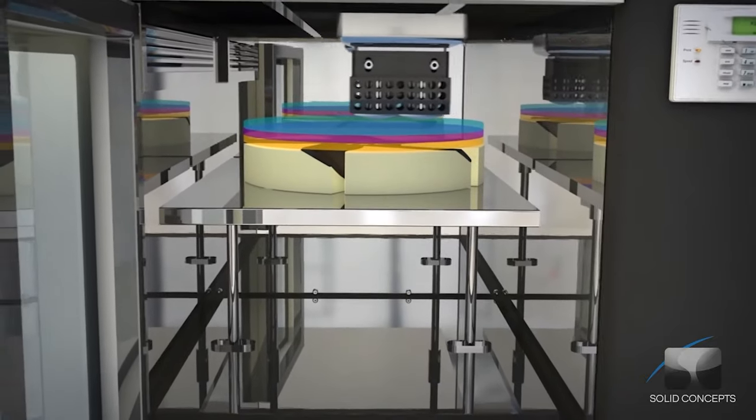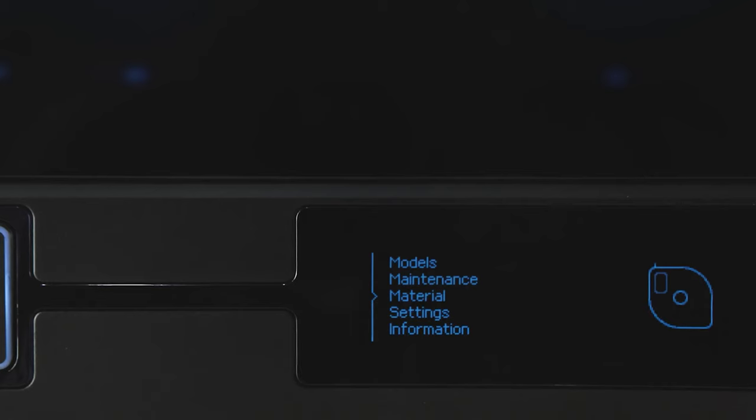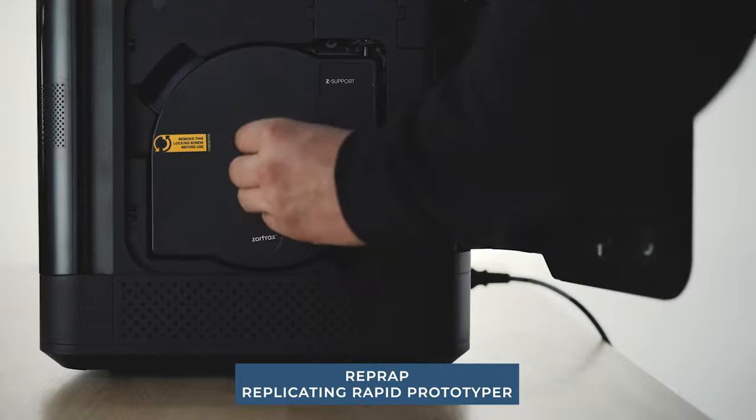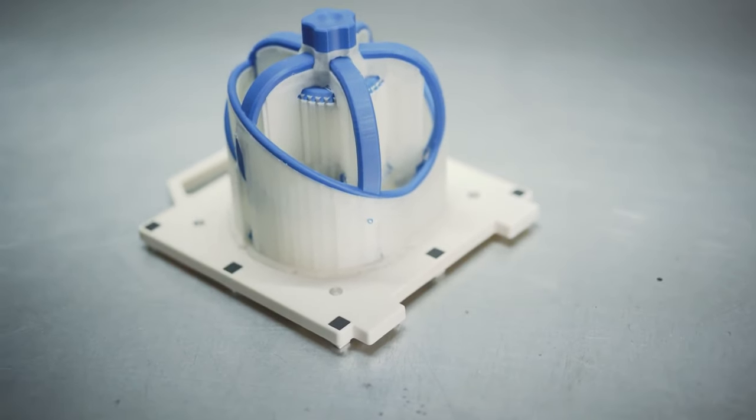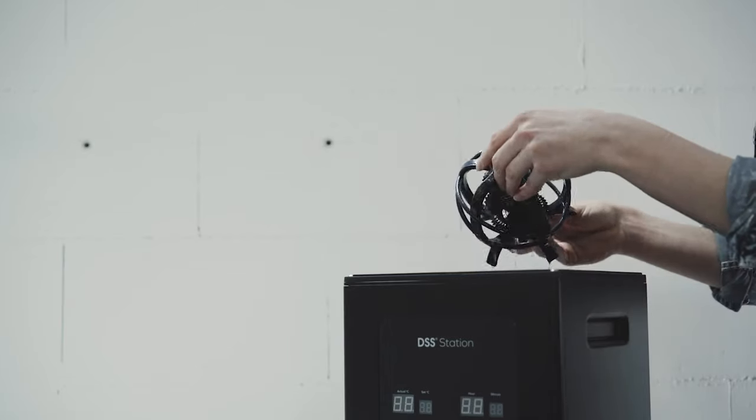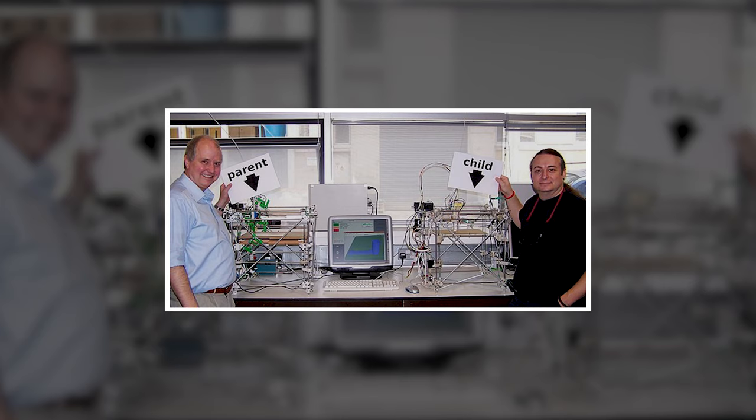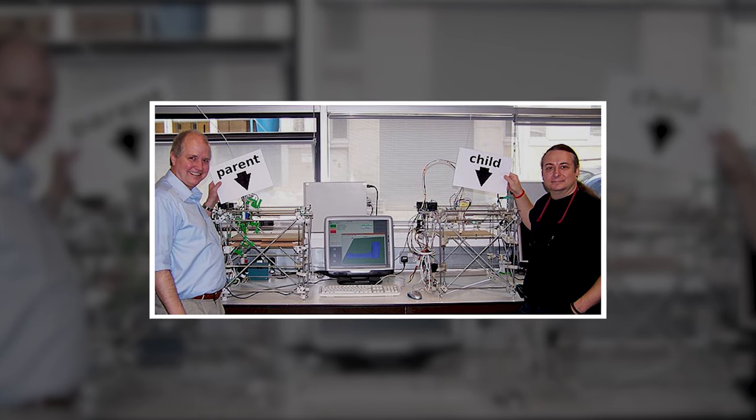FDM technology did not become widespread until more than 20 years later when the RepRap project appeared. RepRap stands for Replicating Rapid Prototyper. This is a self-replicating mechanism for rapid prototyping. The original idea of RepRap was to create a 3D printer that could be printed by another 3D printer. In this photo, all the plastic parts of the child printer are printed on the parent printer.